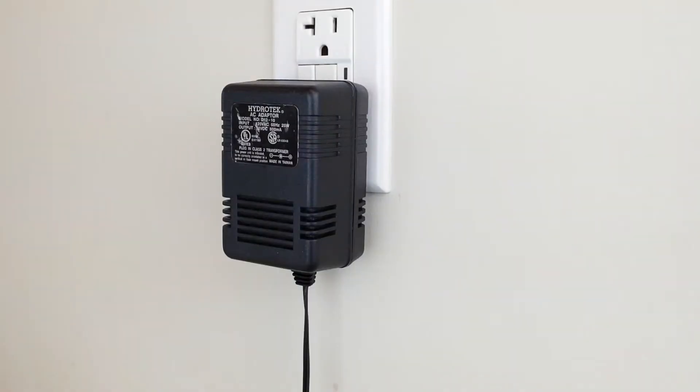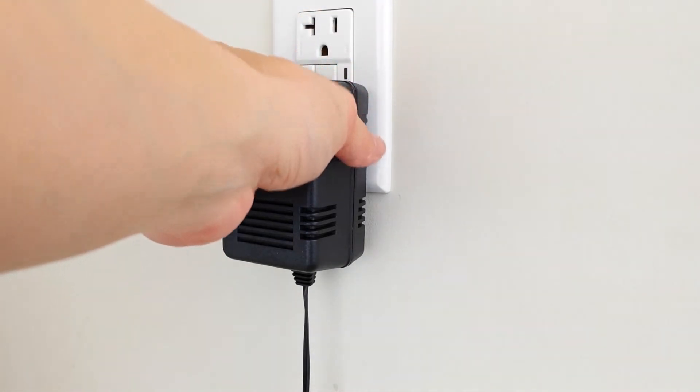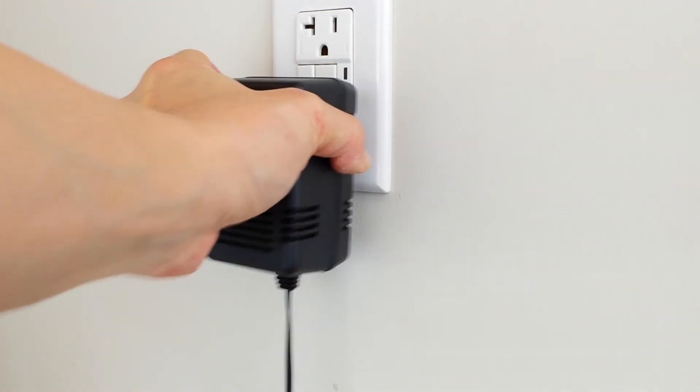First we need to turn off the water supply and power to the faucet. For a plug-in powered faucet simply unplug the power adapter from the wall.